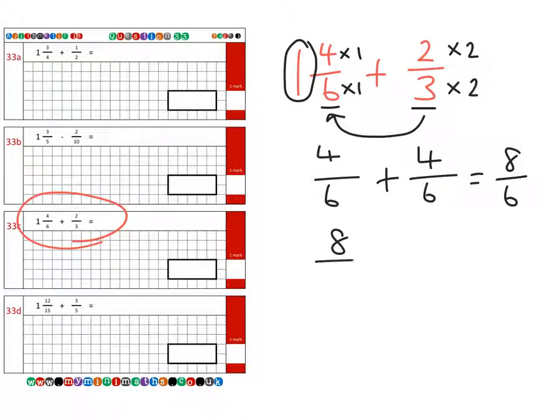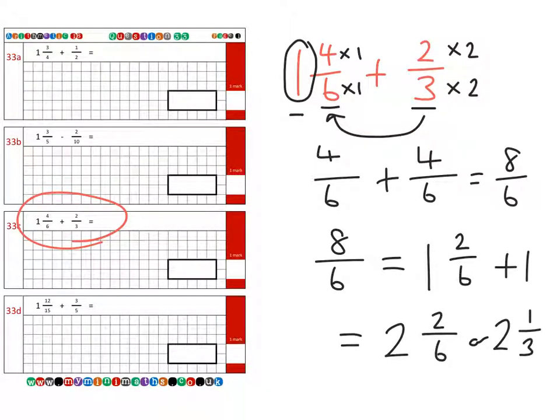8 over 6, or 8 divided by 6, it's the same thing, is 1 with 2 sixths left over. When we add our original 1 to it as well, we have a final answer of 2 and 2 sixths, or 2 and 1 third.